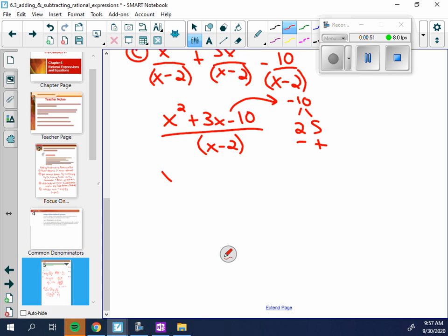Now it will be X minus 2 is one factor, X plus 5 is the other factor. X minus 2 is still in my denominator, so this cancels. My answer is X plus 5.